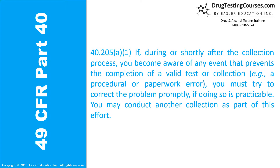40.205A. If, during or shortly after the collection process, you become aware of any event that prevents the completion of a valid test or collection — e.g., a procedural or paperwork error — you must try to correct the problem promptly if doing so is practicable. You may conduct another collection as part of this effort.